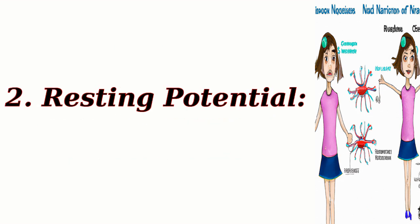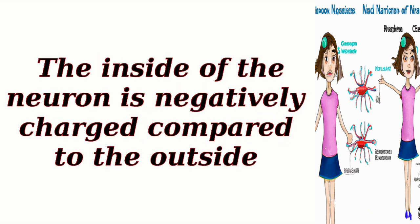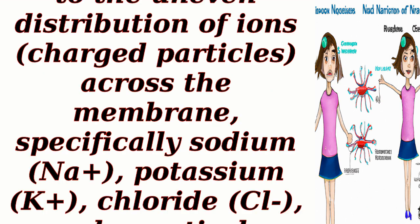Resting potential: Neurons maintain a resting potential, a voltage difference across the cell membrane. The inside of the neuron is negatively charged compared to the outside. This is mainly due to the uneven distribution of ions — charged particles — across the membrane, specifically sodium (Na+), potassium (K+), chloride (Cl-), and negatively charged proteins.